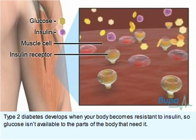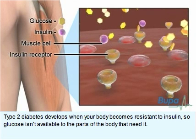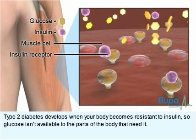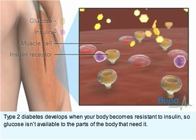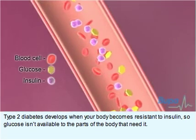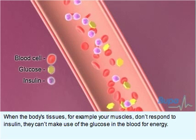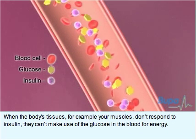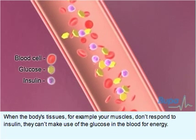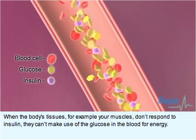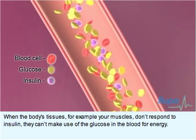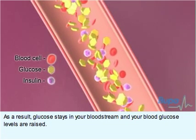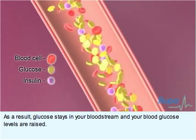Type 2 diabetes develops when your body becomes resistant to insulin, so glucose isn't available to the parts of the body that need it. When the body's tissues, for example your muscles, don't respond to insulin, they can't make use of the glucose in the blood for energy. As a result, glucose stays in your bloodstream and your blood glucose levels are raised.